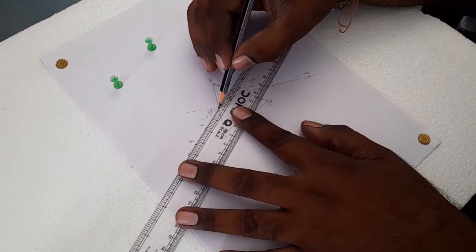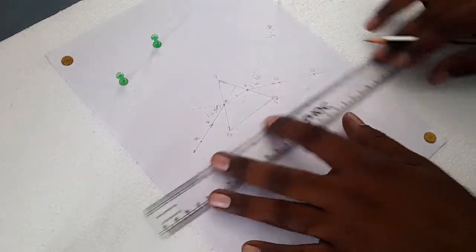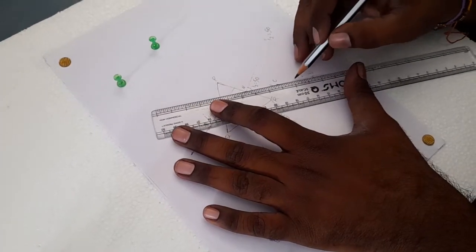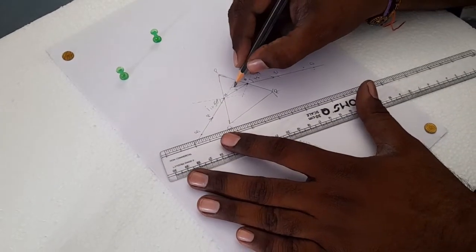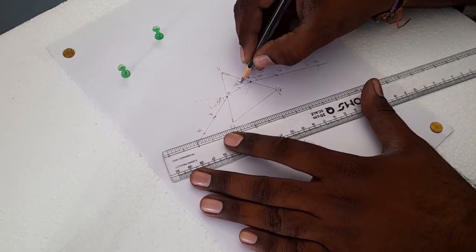We need to extend the incident ray. We need to extend the emergent ray also. Where these two rays meet, that is the angle of deviation.